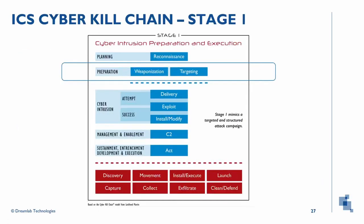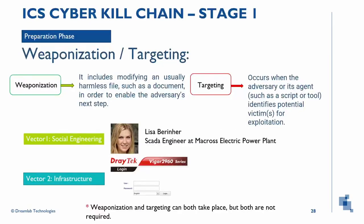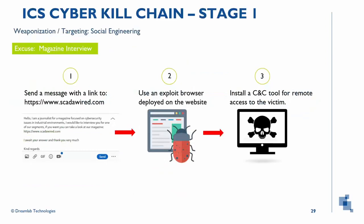The next step is preparation. In this step there is weaponization and targeting; both can take place but are not required. Basically this step is to prepare the tools according to the identified objectives. In this case we will use two vectors: the social engineering vector, and another we will call the infrastructure vector. For the social engineering vector, the goal is that the victim visits a malicious website that exploits a vulnerability in order to take control of her computer. Our pretext will be an interview for a magazine specialized in cybersecurity issues in industrial environments.